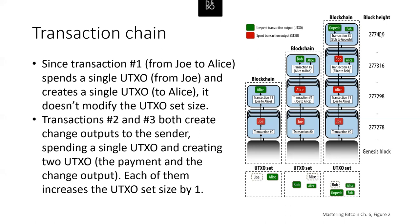Then in block 277430, Bob sends some Bitcoin to Gopesh and gives himself some change. He takes the payment from Alice and sends it to Gopesh with some change returned to himself. His original transaction from block 277316 is now spent, and two new UTXOs are added — one for Gopesh and one for Bob. The UTXO set got larger. When spending one UTXO and creating two new ones each time, we're increasing the UTXO set size.